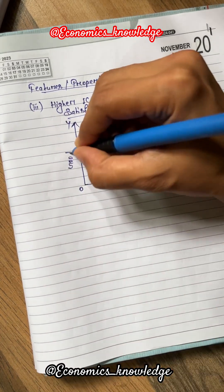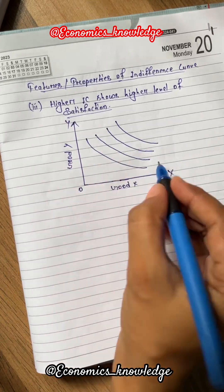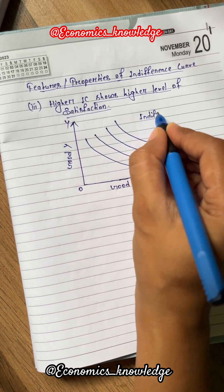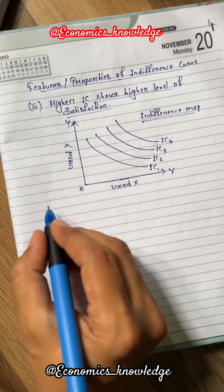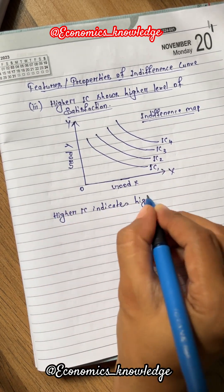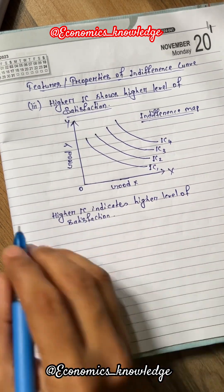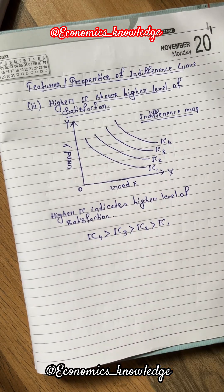In the diagram, a set of ICs are drawn. A set of ICs drawn in a graph is called an Indifference Map. In the diagram, IC4 indicates higher level of satisfaction than IC3, IC3 higher than IC2, and IC2 higher than IC1. Thus, higher IC shows higher level of satisfaction.